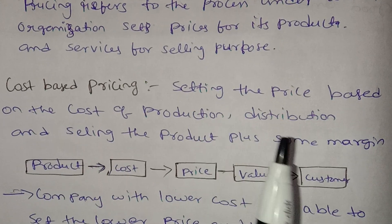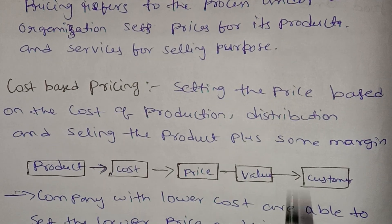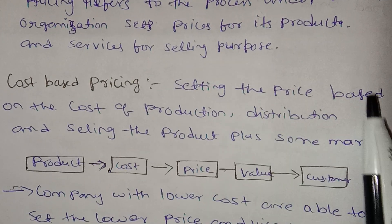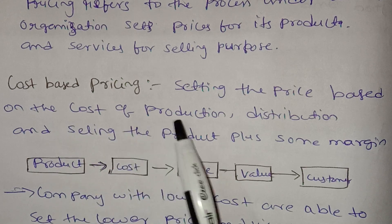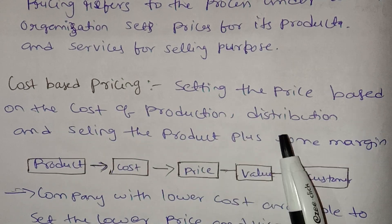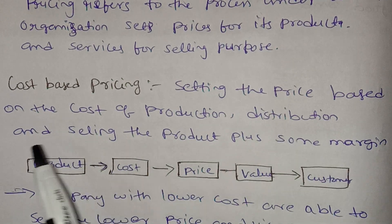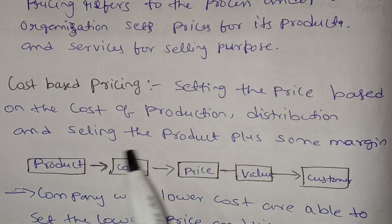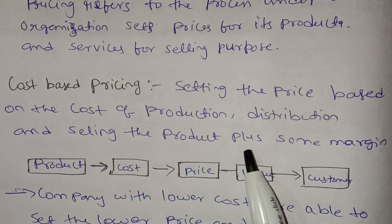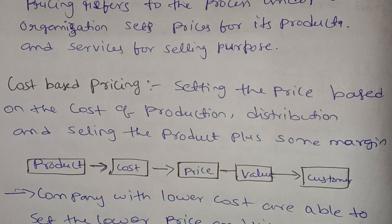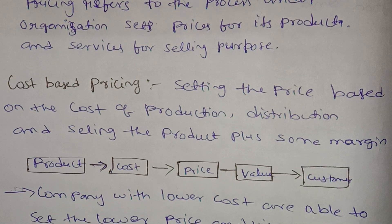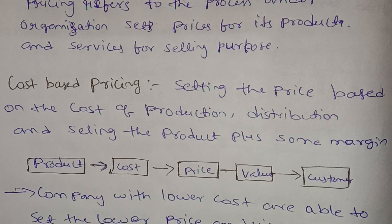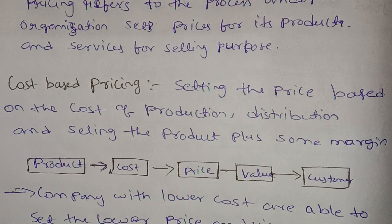Cost-based pricing is setting the price based on the cost of production, distribution, and selling the product, plus some margin.